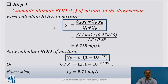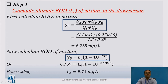Let us solve the question step by step. Step 1: Calculate the ultimate BOD of the mixture downstream. When an effluent with higher BOD and lower DO is added to a stream with lower BOD and higher DO, the mixed BOD is calculated as: (QS × YS + QE × YE) / (QS + QE) — that is, the discharge times BOD of the stream plus the discharge times BOD of the effluent, divided by total discharge. Putting in the values, we get 6.759 mg/L.